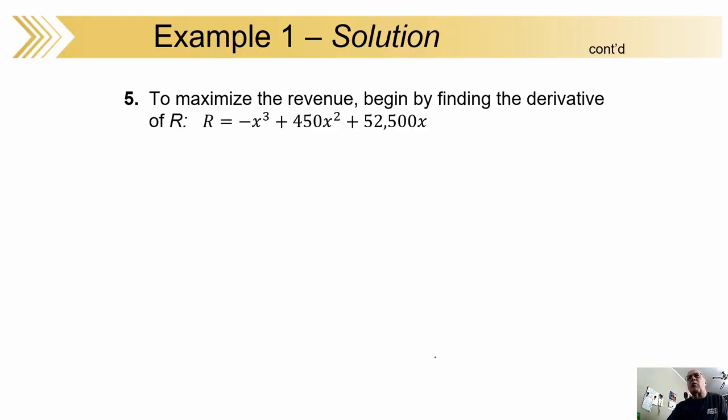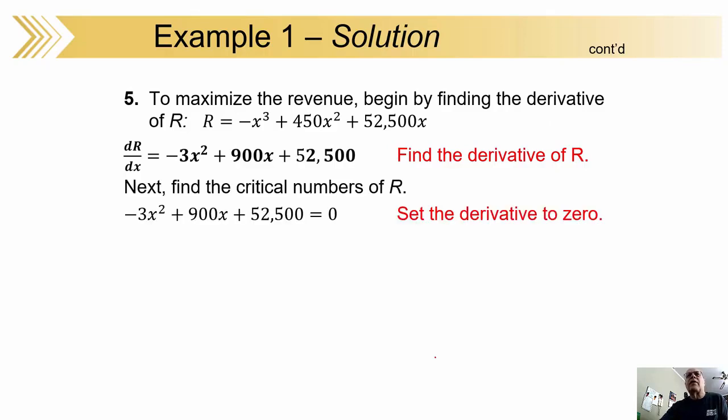To maximize it, you need to first find the derivative. Here's the revenue equation. You could write that as R(x), that's fine. Or just R. There's your derivative. Once you've got the derivative, you set it equal to 0 to get the critical numbers.